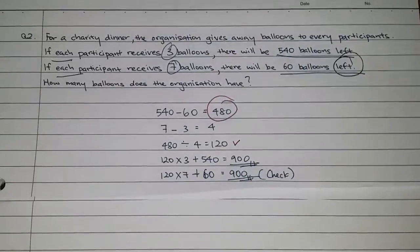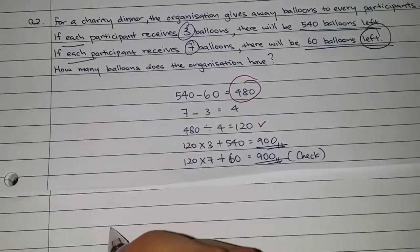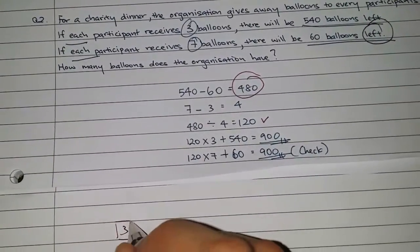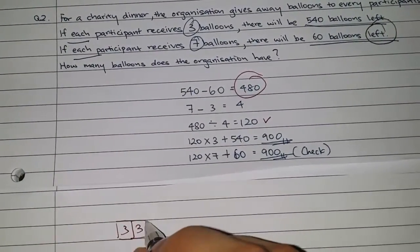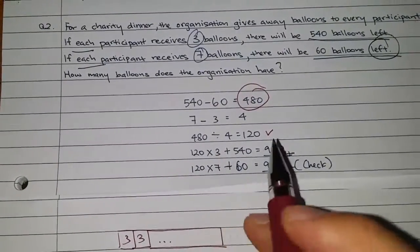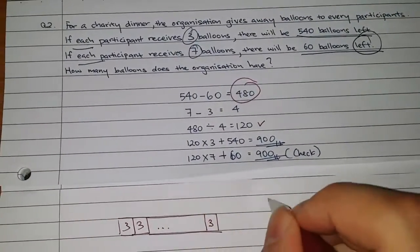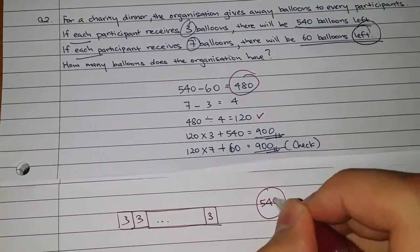So what we do here first is that we start giving out each participant 3 balloons, give the least number first which is 3. The next one, 3 all the way. We do not know how many participants are there in this question. However, because there are balloons left we can ensure that everyone received 3 balloons each and then you have 540 left.